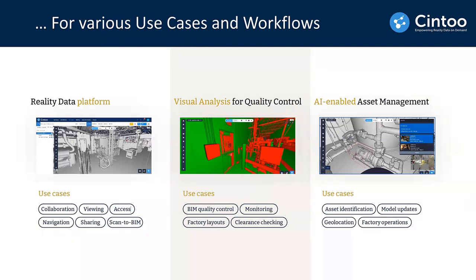The third value proposition is asset management — viewing your equipment in as-built conditions. Equipment can be listed from CAD models or automatically detected and tagged using our AI engine. We can detect equipment in your scanned data. This feature will be released in a few months and is already in beta for those who want to test asset management capability now.